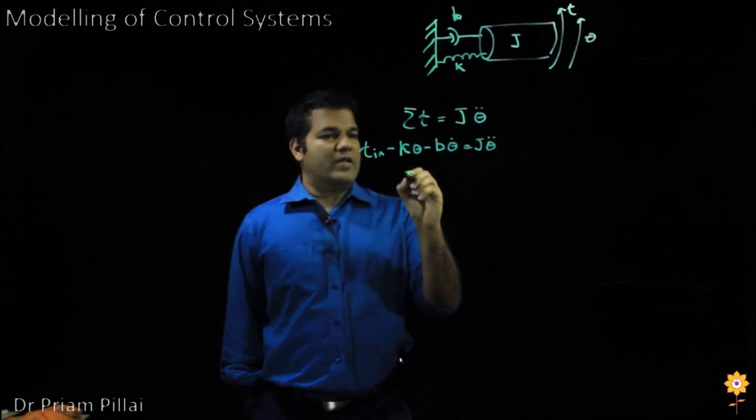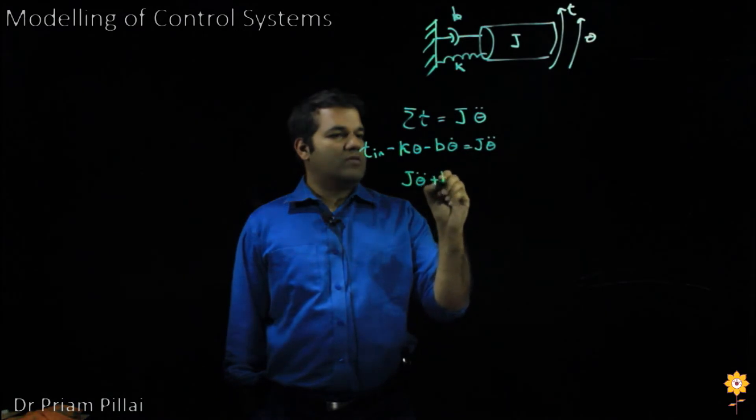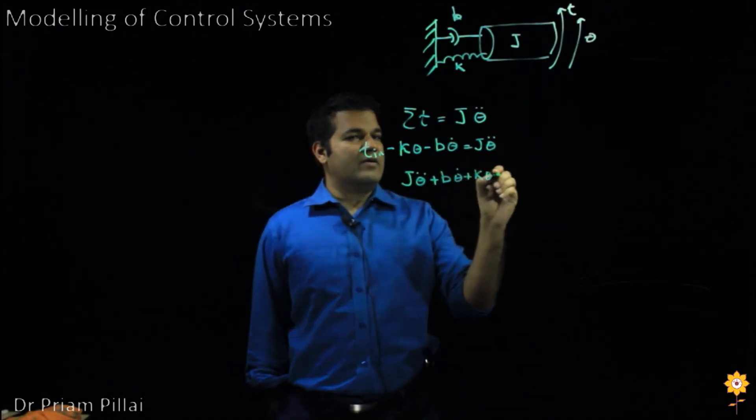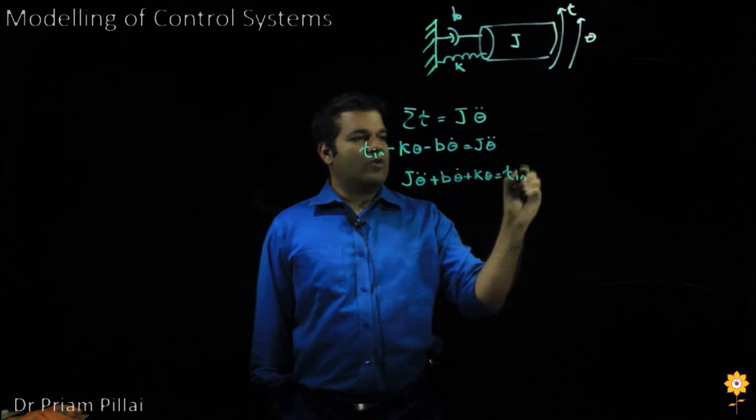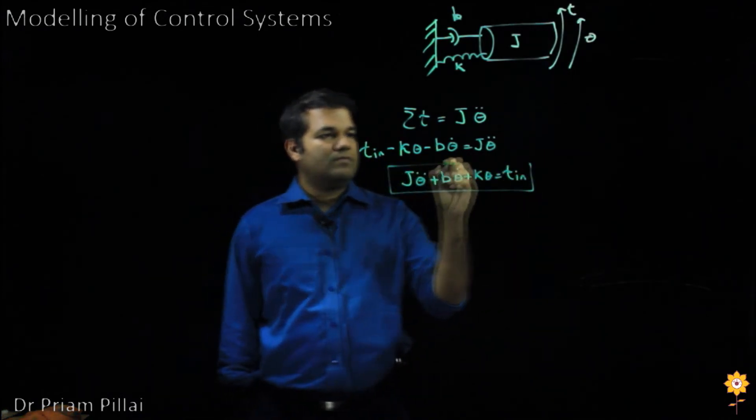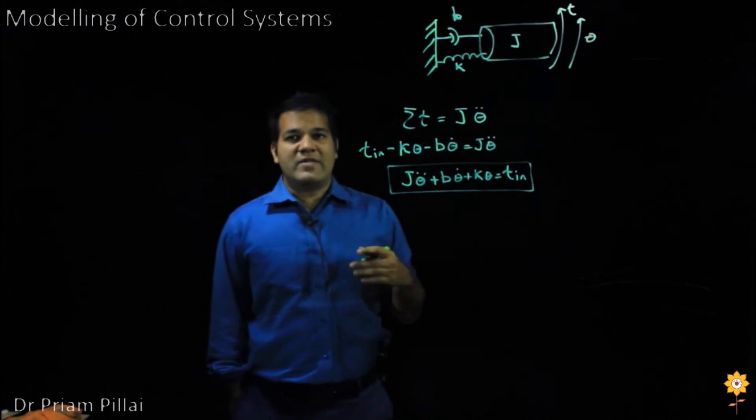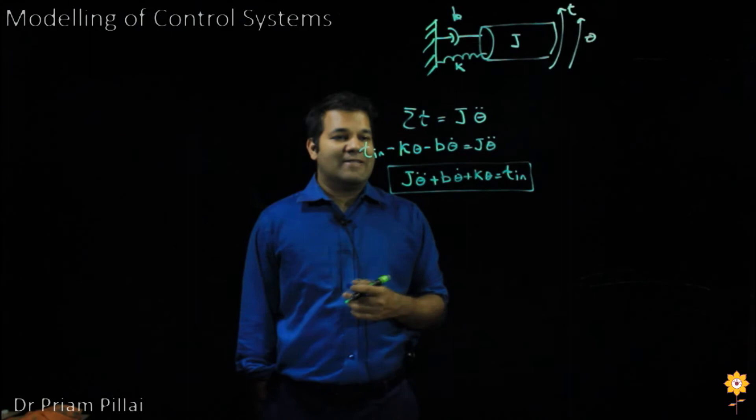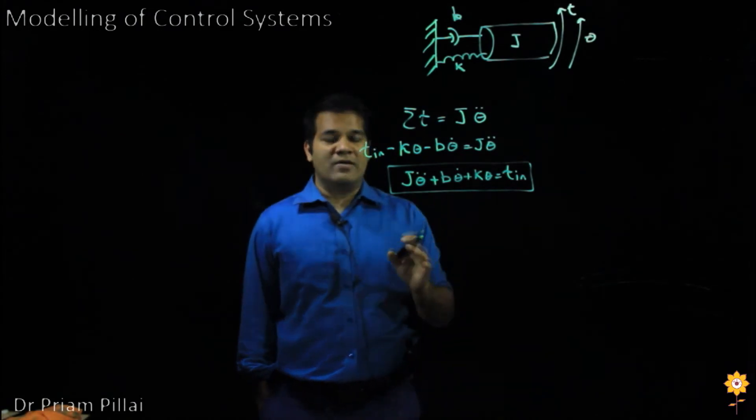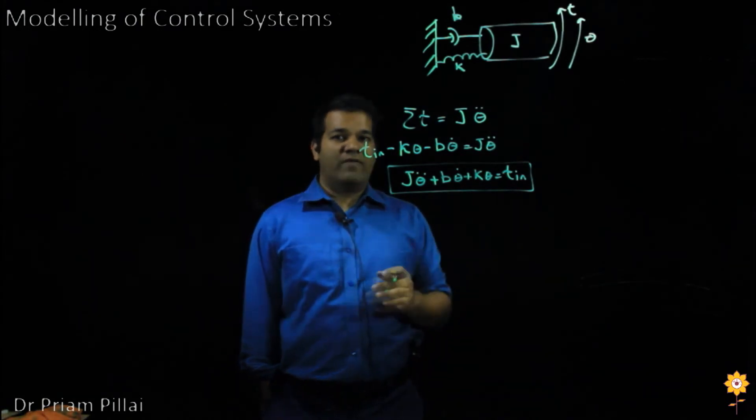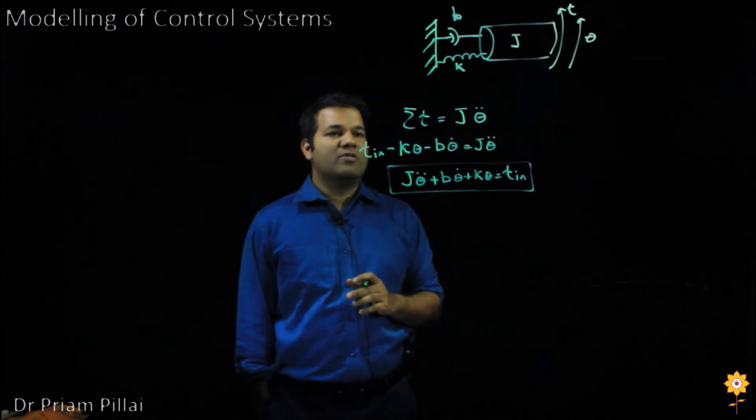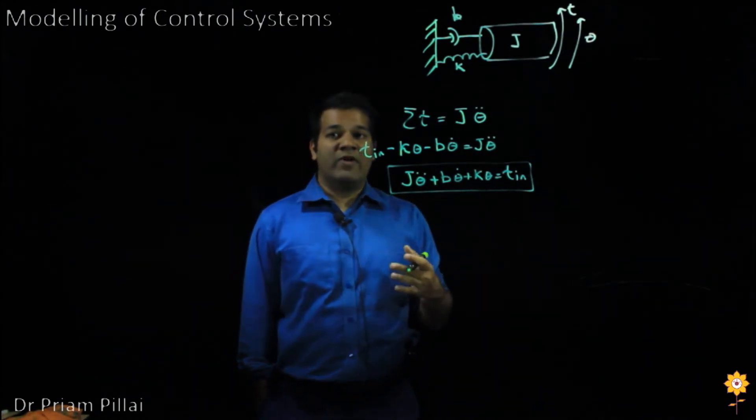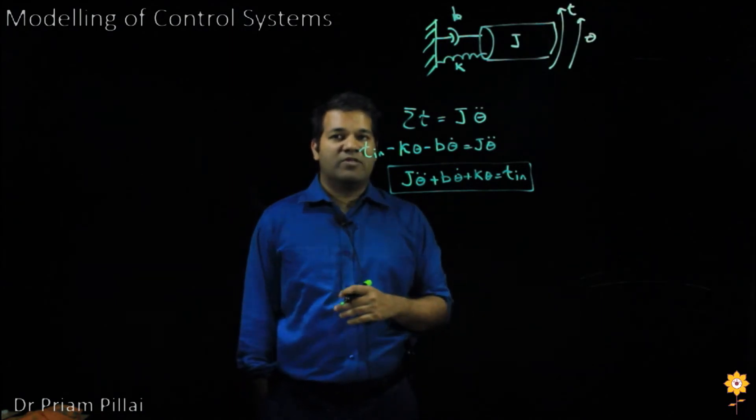And then J theta double dot plus B theta dot plus K theta equals the input torque. Similarly, we have the same type of equation that we saw in the linear translational system. This system is also linear. It's a second order ordinary differential equation with constant coefficients. So you could envision that the solutions to this would look very similar to the solutions of the previous equation that we saw.